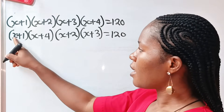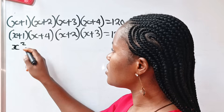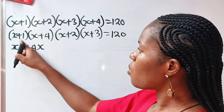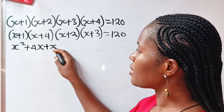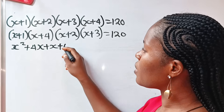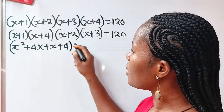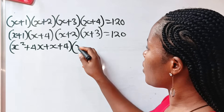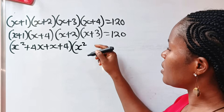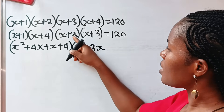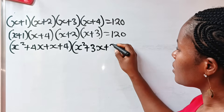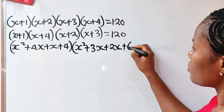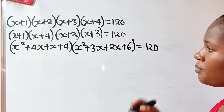Now we can expand each pair. Expanding x plus one times x plus four: x times x gives x squared, x times four gives four x, one times x gives x, and one times four gives four. Then expanding x plus two times x plus three: x squared, plus three x, plus two x, plus six. This is all equal to 120.